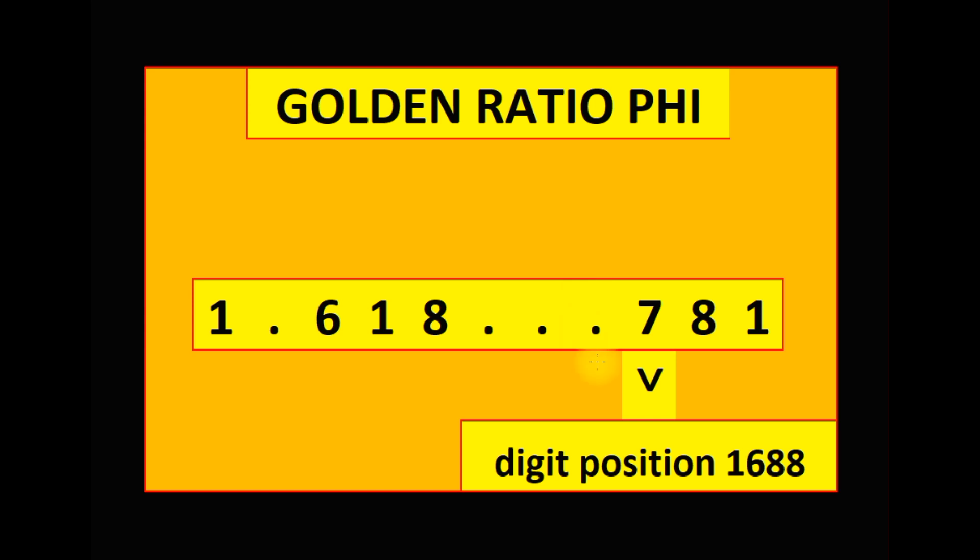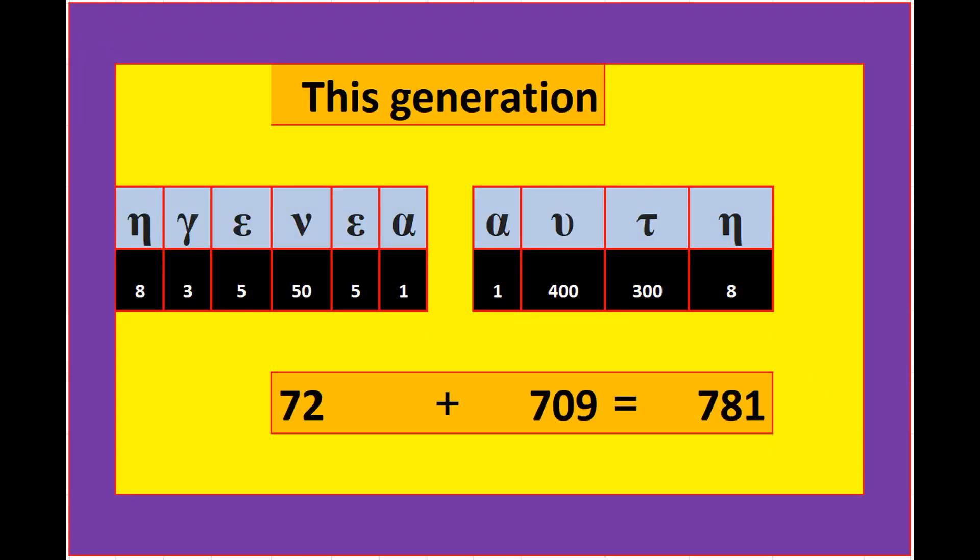At position 1688 in the golden ratio, the golden mean, is the number 781. This generation in Greek has a sum total Greek letter value of 781.